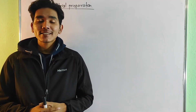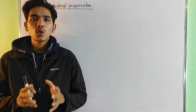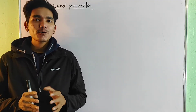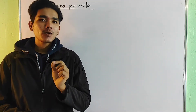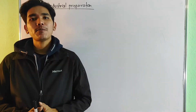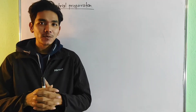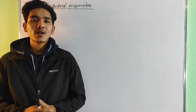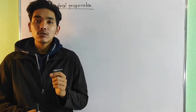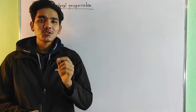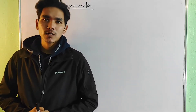Hello students, in today's class we will continue from the last class. In the last class, we discussed alcohol, phenol and ether. We started with alcohol and covered the general method of preparation, nomenclature and isomerism. In this class, we will discuss chemical properties.